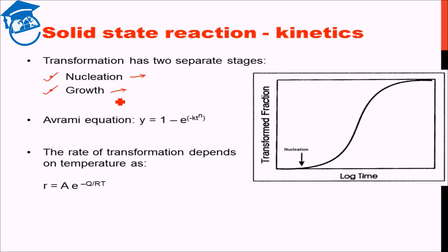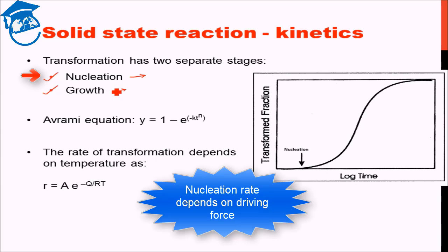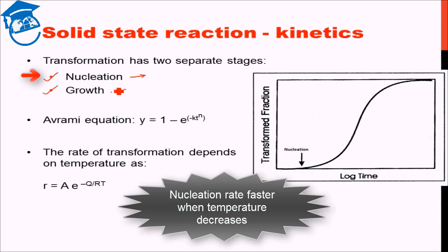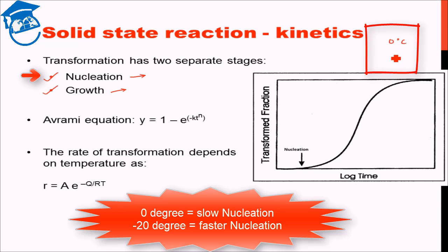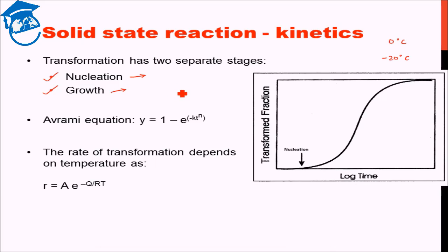The nucleation rate depends on what is the driving force. Suppose you are trying to freeze water — the nucleation rate will be faster the lower the temperature. If you keep the temperature at 0°C, the rate of nucleation will be quite low. On the other hand, if you take the water suddenly to minus 20°C, the rate of nucleation will be very fast and nucleation will not take much time. So how large the driving force is for the transformation will decide the rate of nucleation.